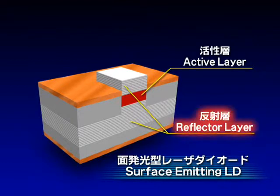However, since a nitride semiconductor has no material that is capable of forming reflector layers, it has been believed to be impossible to produce a surface emitting laser diode.